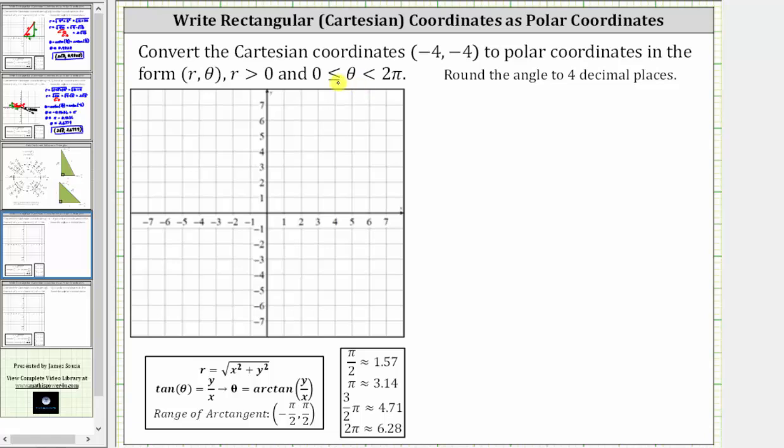and theta is in the interval from zero to two pi radians, closed on zero, open on two pi.